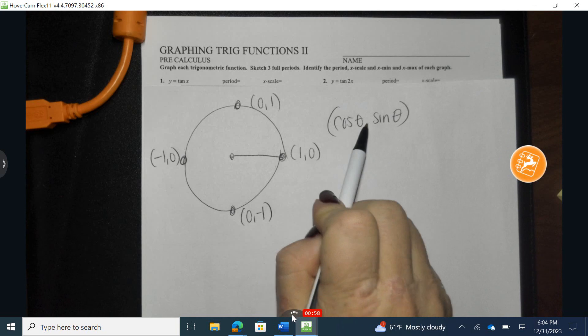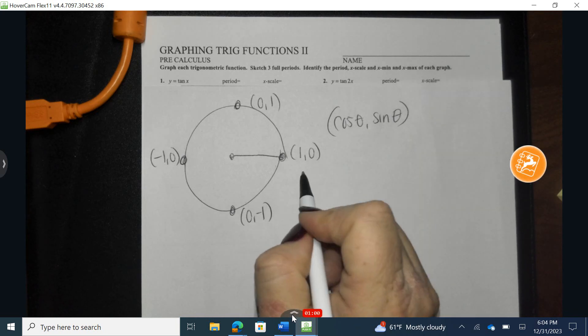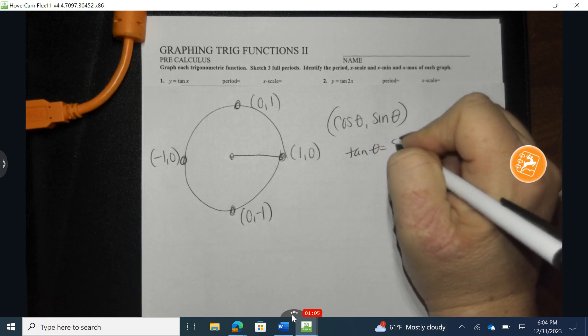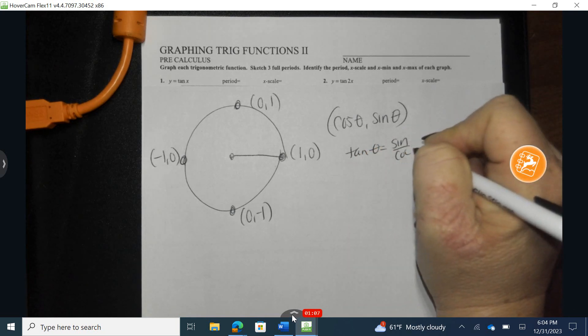Remember, CVS, cosine before sine. So when I want to identify the tangent, we just look to see that tangent is the same as sine divided by cosine.